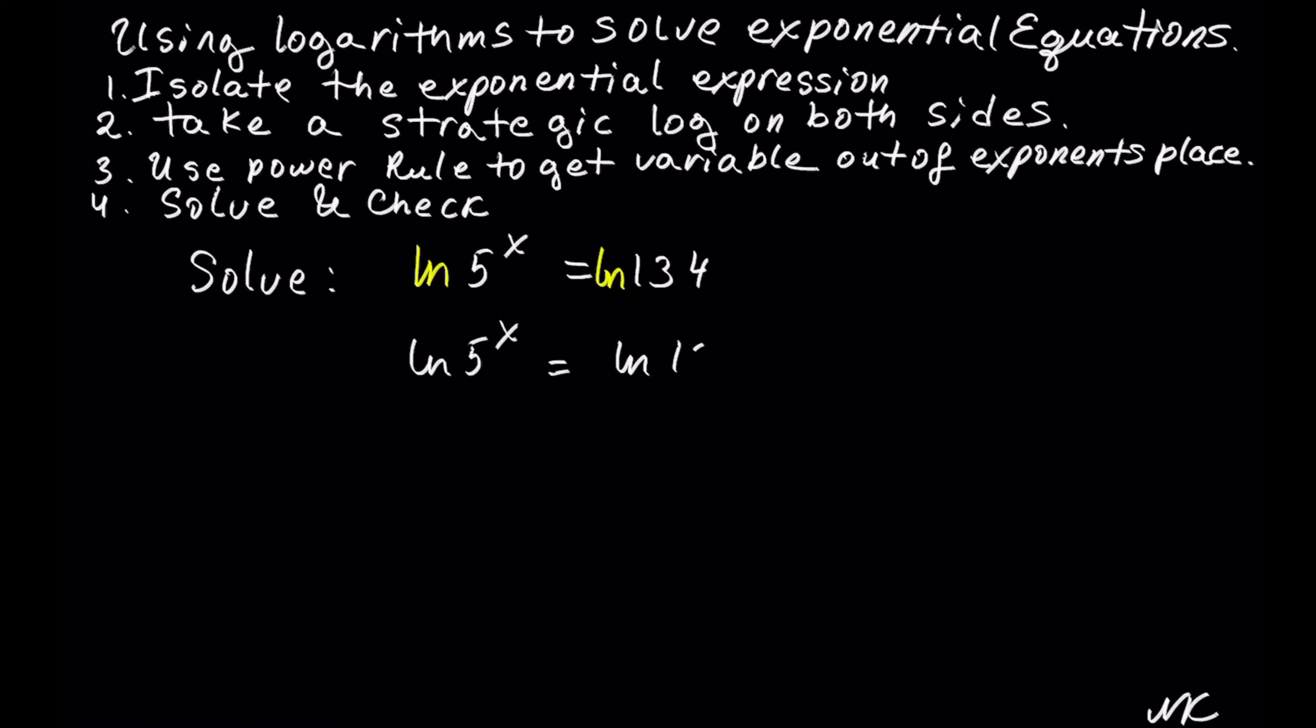Once we have ln of 5 to the x equals ln of 134, we can use the power rule to move the exponent into the coefficient space and have x ln of 5 equals ln of 134.